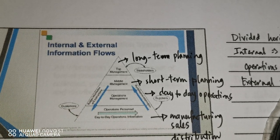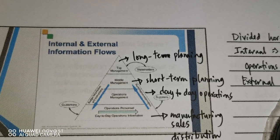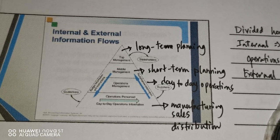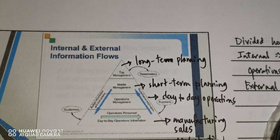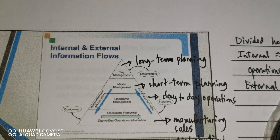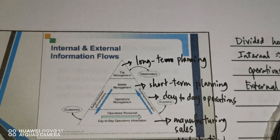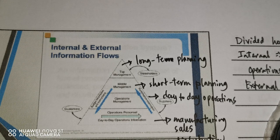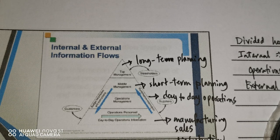Operations personnel are directly involved with the day-to-day operations of the business — for example, manufacturing, sales, and distribution. Above them is operations management, which are their immediate supervisors involved in managing day-to-day operations. Above them is middle management, which is involved in short-term planning that complies with the long-term planning done by top management.